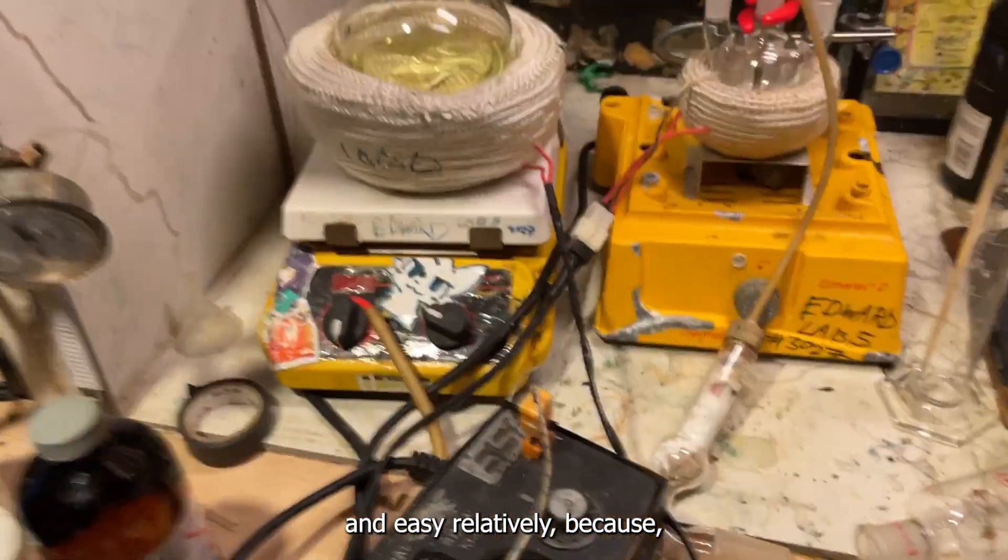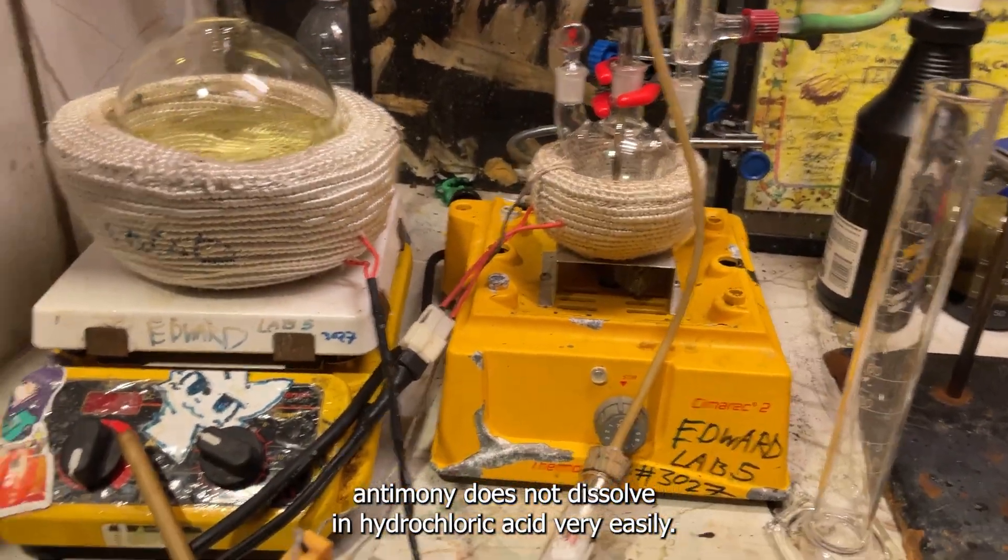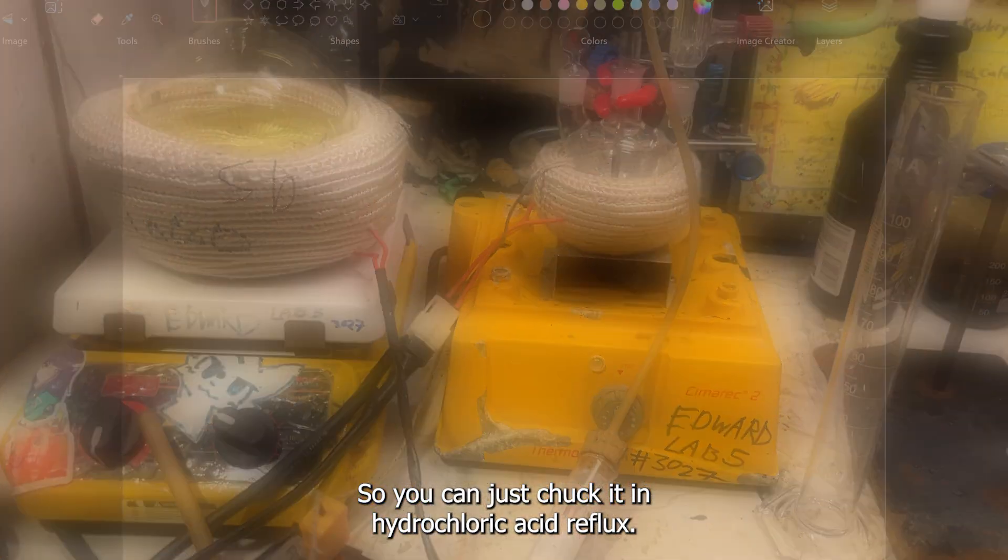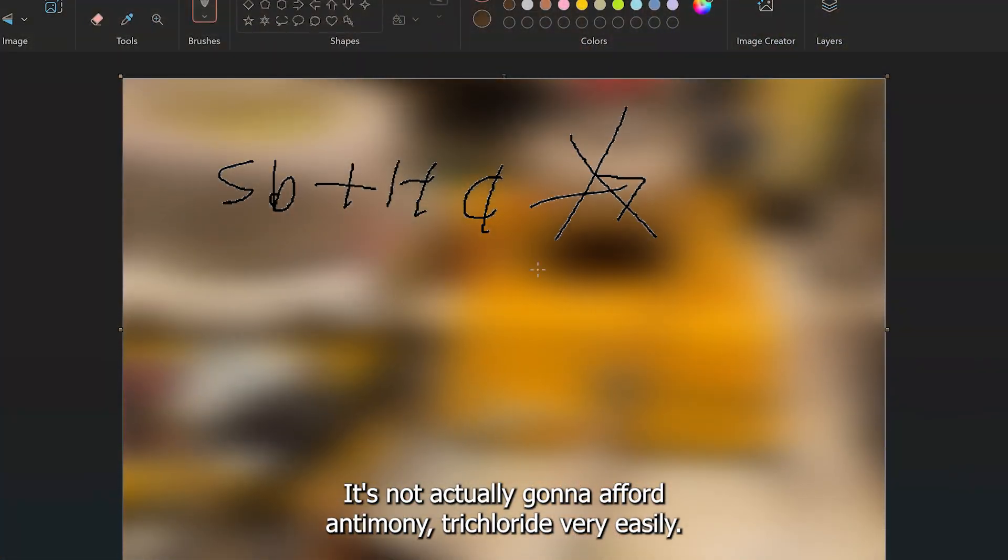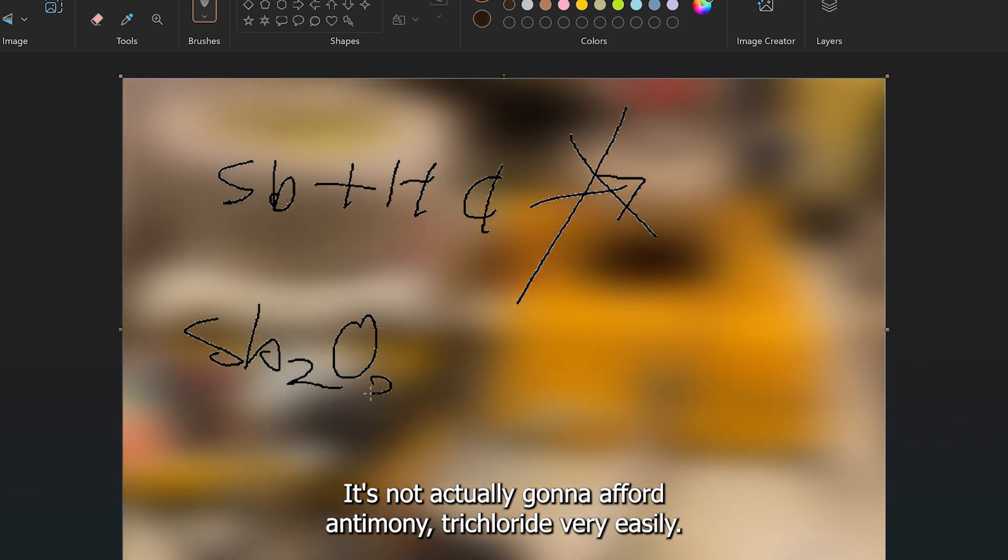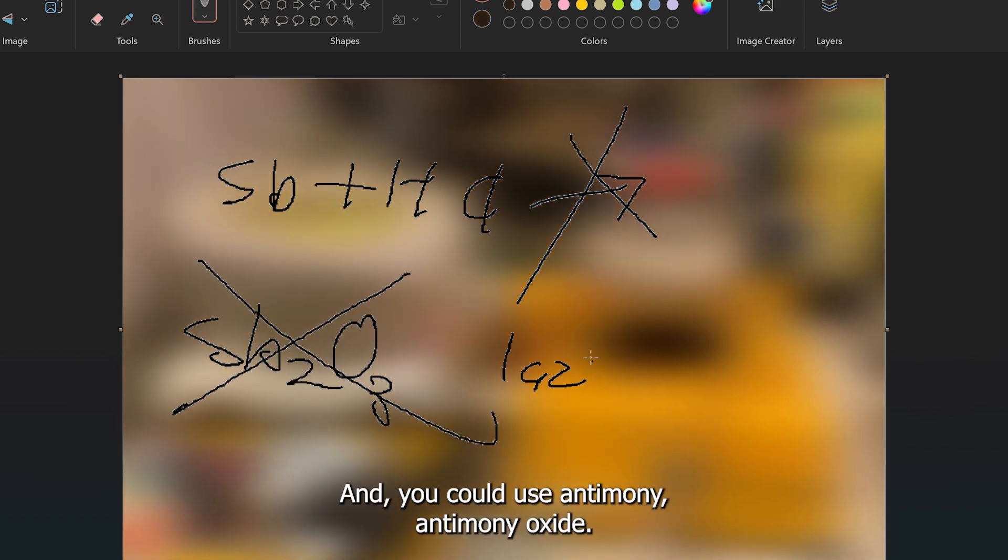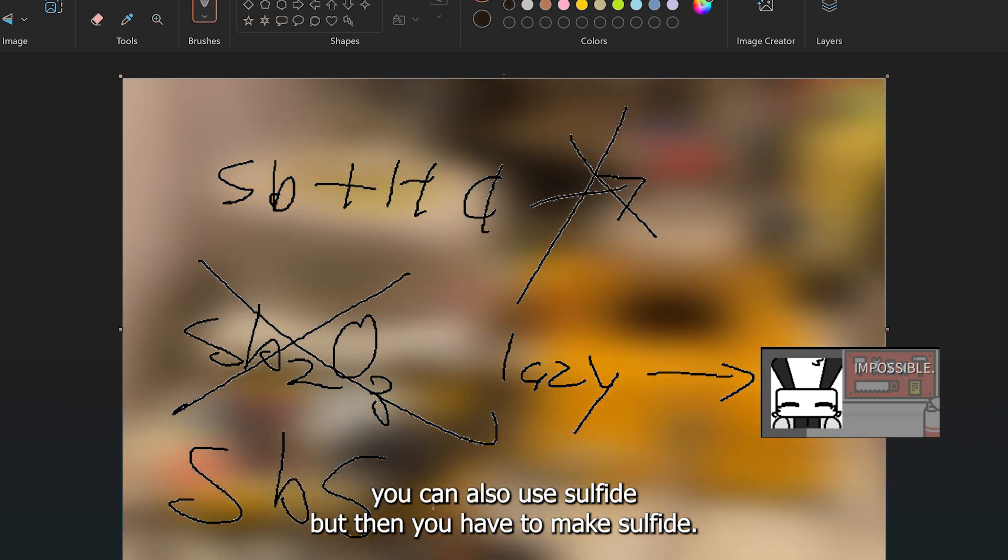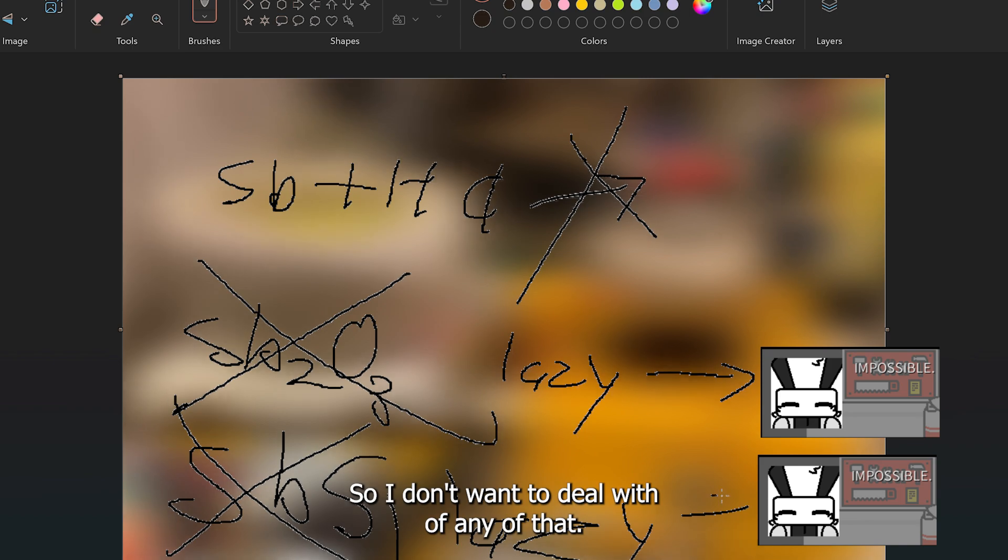Well, easy relatively, because antimony does not dissolve in hydrochloric acid very easily. So if you just chuck it in hydrochloric acid reflux, it's not actually going to form antimony trichloride very easily. And you could use antimony pentafluoride, but then you have to make antimony oxide. Or you could also use sulfide. So I don't want to deal with any of that, I'm just going to react chlorine with it directly.